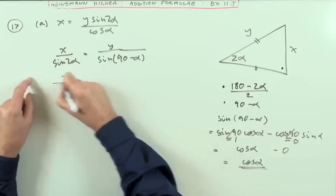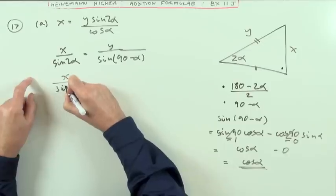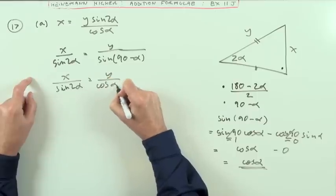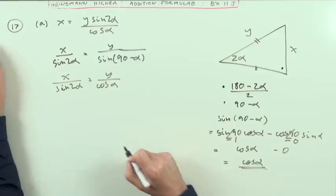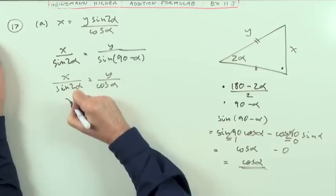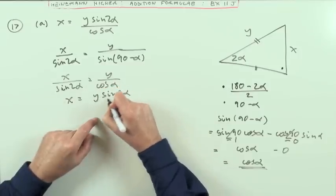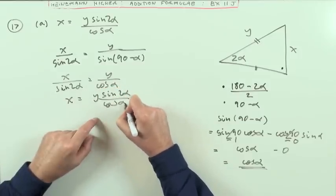So I can change this expression then. X over the sine of 2α should be Y over, and that's the cos. If that's the complement, it'll be the cosine. It's the cosine of the complement, which means that X is going to be, take that across and multiply, Y sine 2α over cos α.